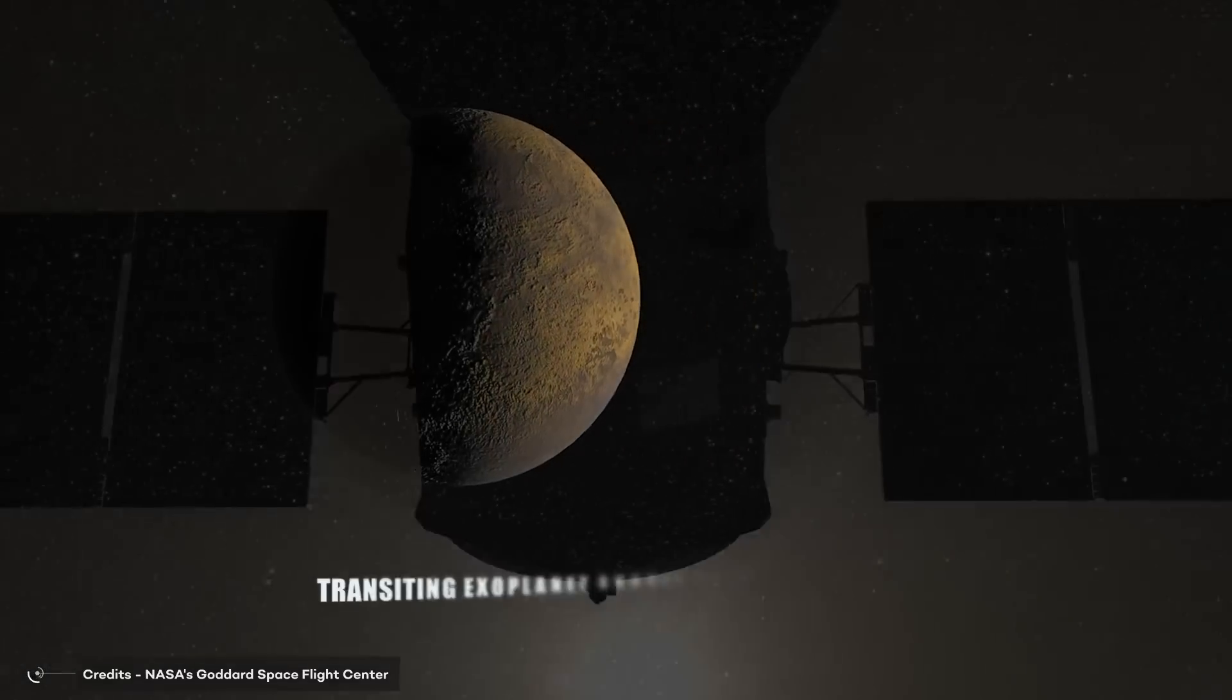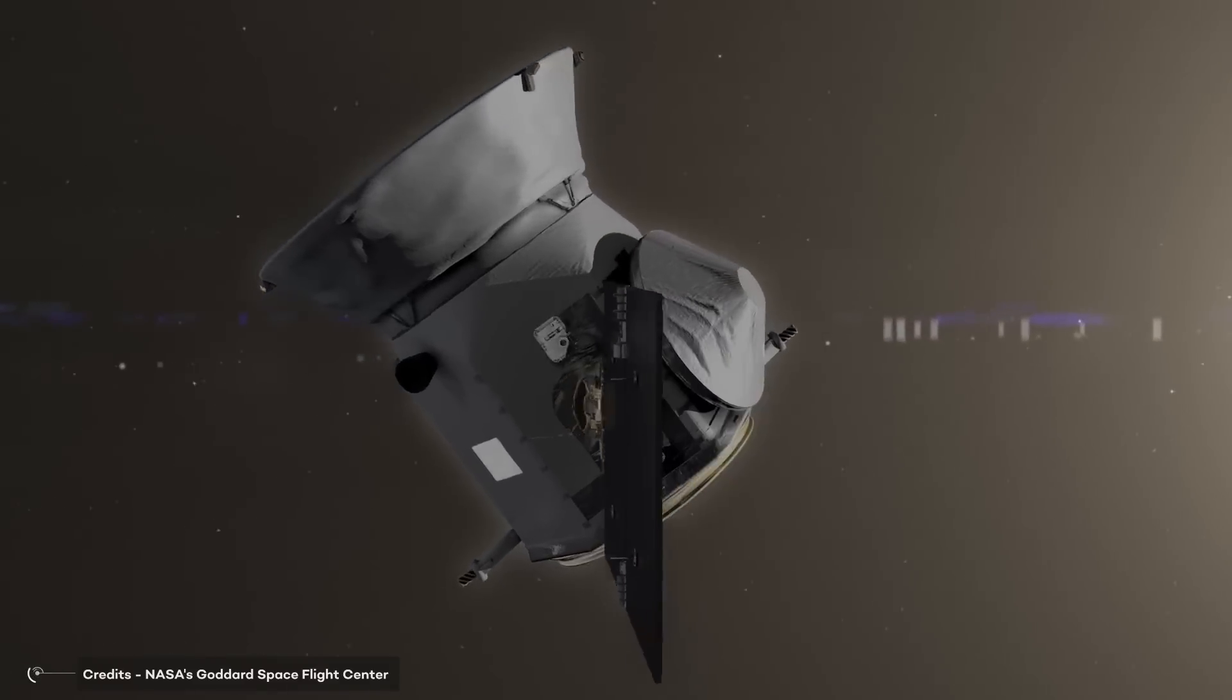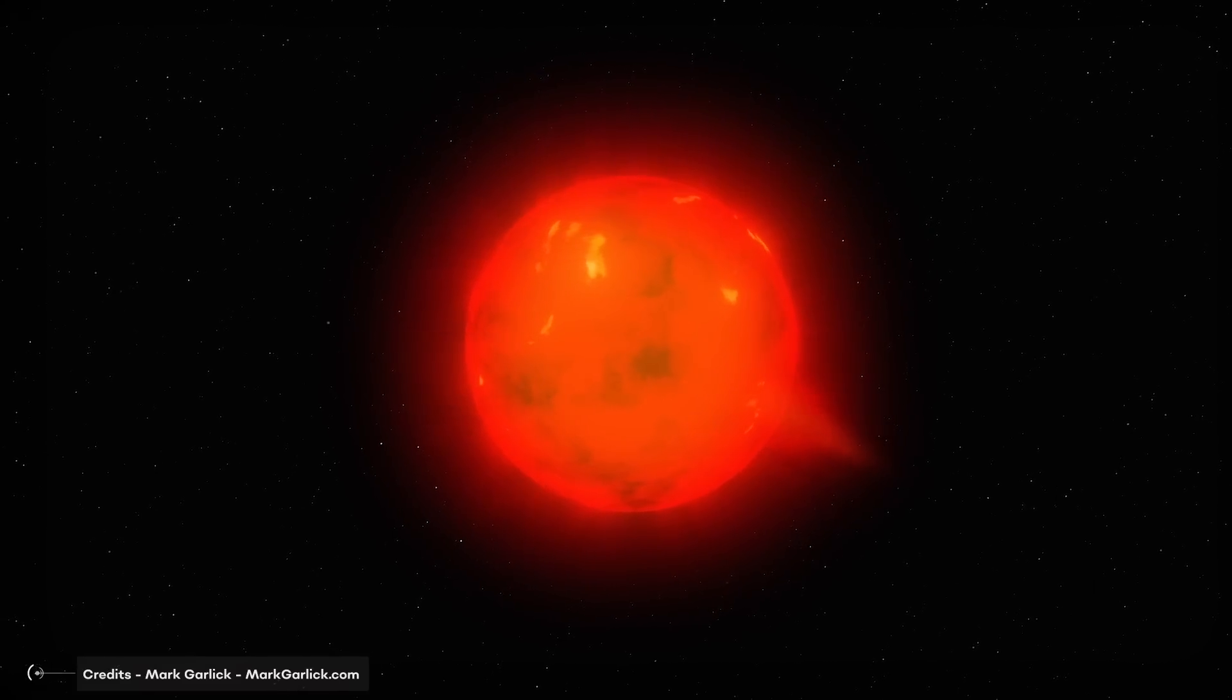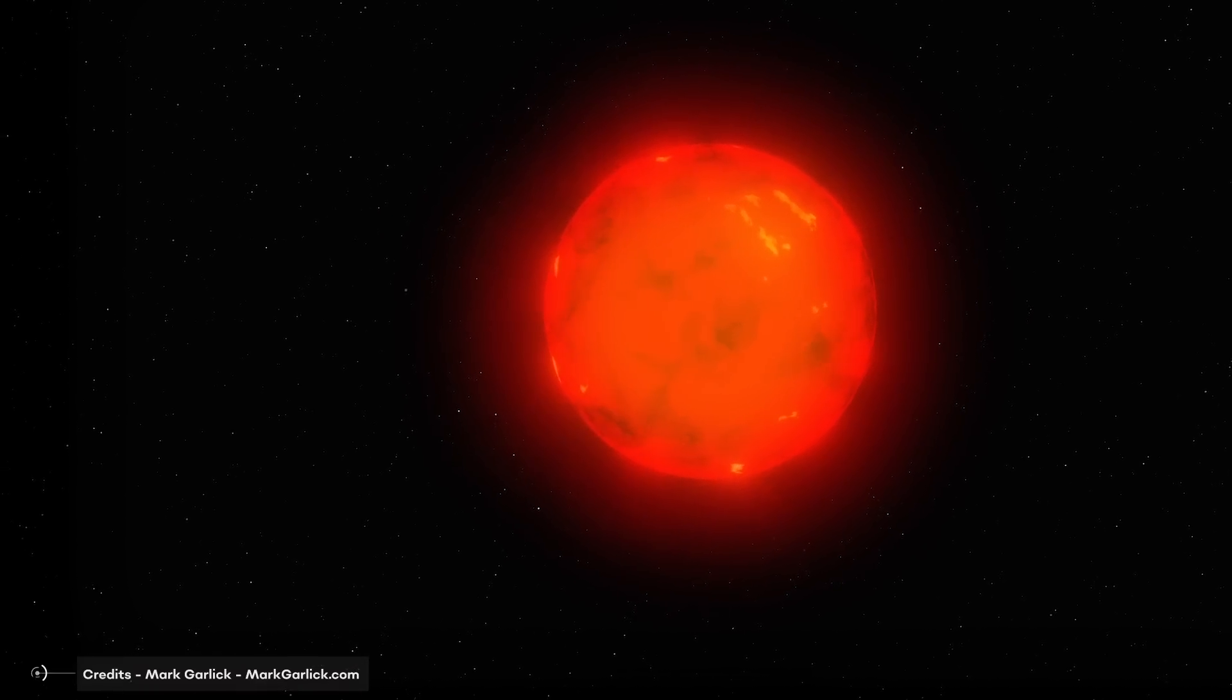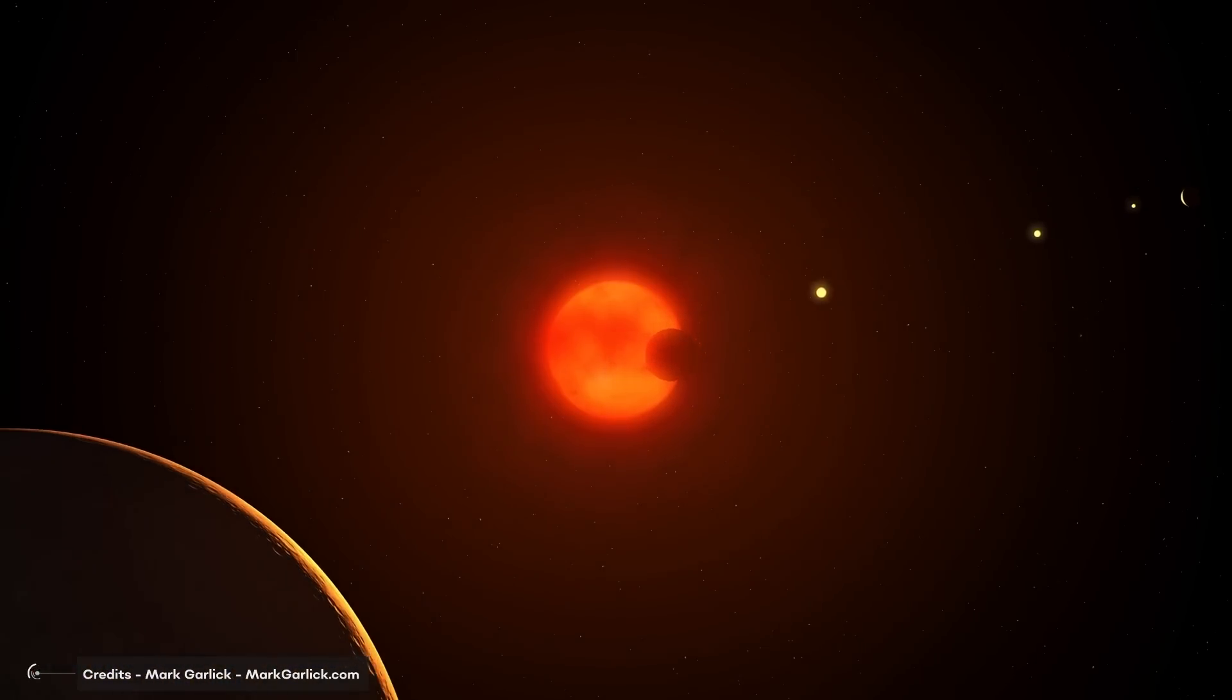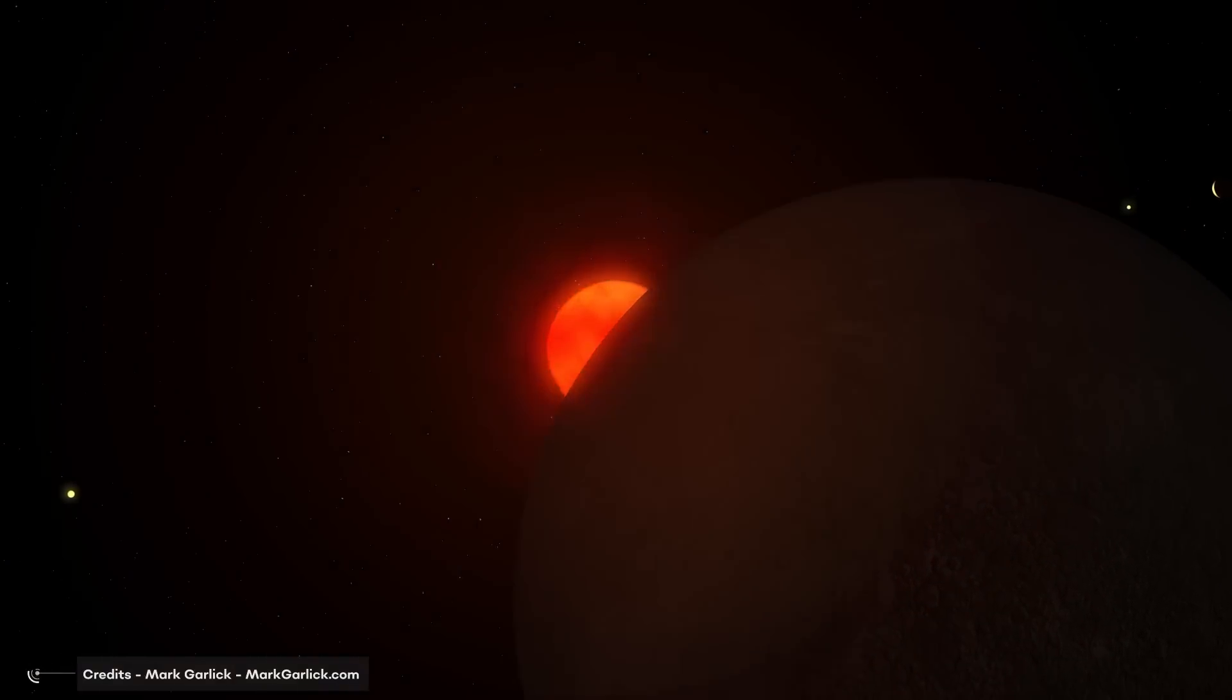This giant exoplanet was spotted by the Transiting Exoplanet Survey Satellite, TESS, launched by NASA in 2018. TESS surveys the light of the brightest and nearest stars to spot dips in the starlight, indicating that the star has planets orbiting around it. This planet orbits an M dwarf star called TOI-5205, which is about 40% the size and mass of our Sun and is much cooler. It is therefore a tiny, cute little star. And it is exactly the small size of this star that usually doesn't allow giant planets to be found in orbit around it.